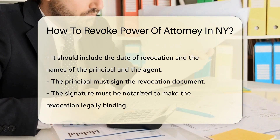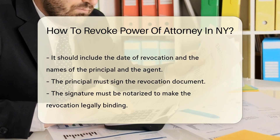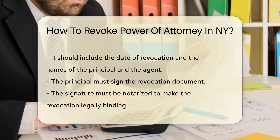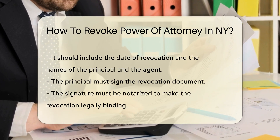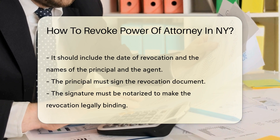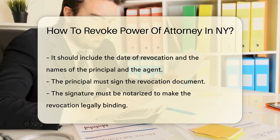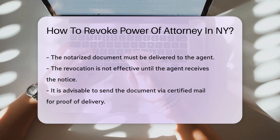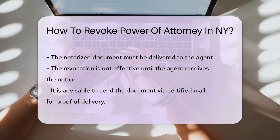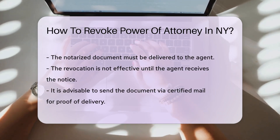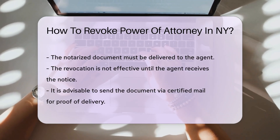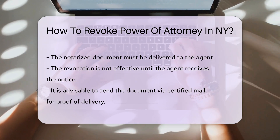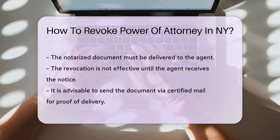Next, the principal must sign the revocation document. The signature must be notarized to be legally binding, which adds a layer of authenticity to the revocation. Once the document is signed and notarized, it must be delivered to the agent, as the revocation is not effective until the agent receives this notice. It is advisable to send the document via certified mail to have proof of delivery.